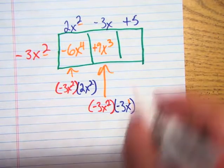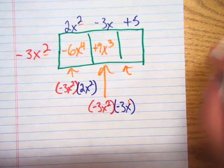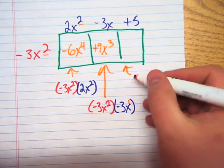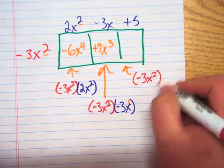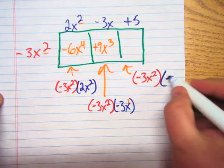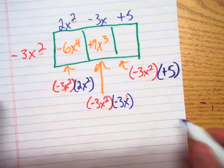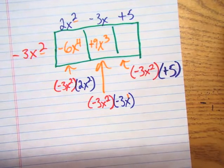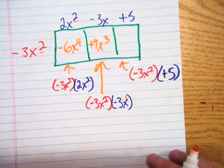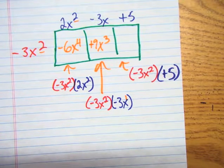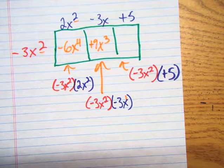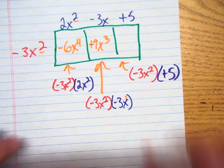All right, so now what do we do here? We need to multiply negative 3x squared times positive 5. So now what's that answer going to be? What's negative 3 times 5? Negative 15. Then you carry your x squared. So it's negative 15x squared.